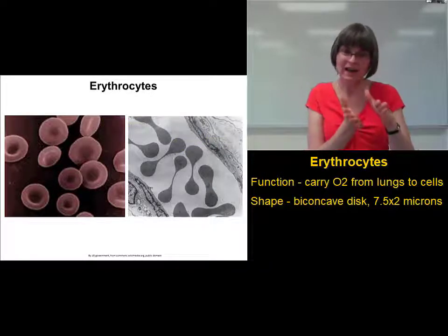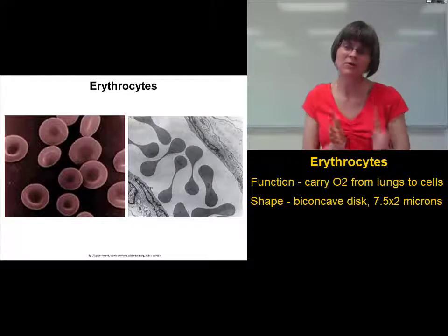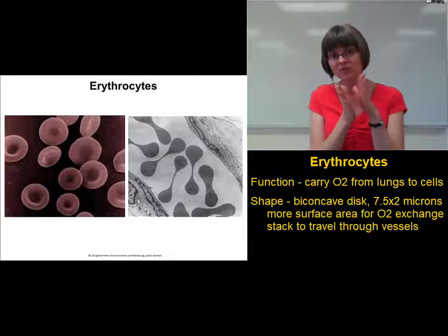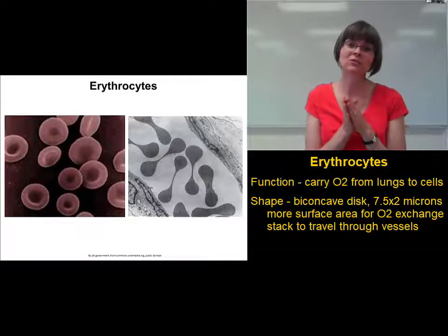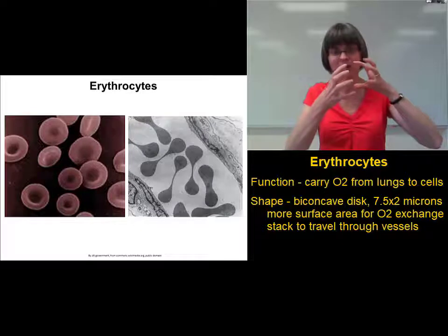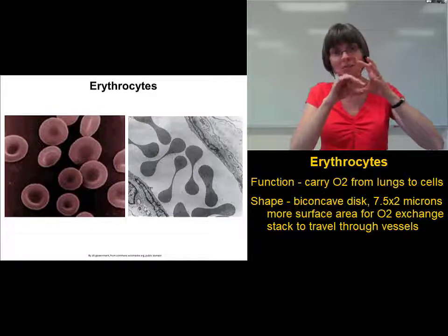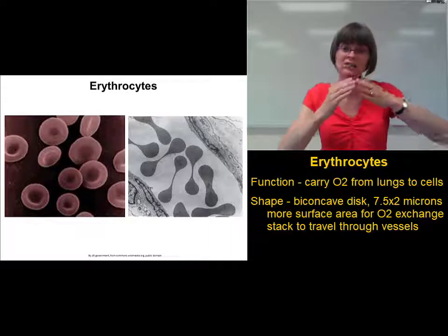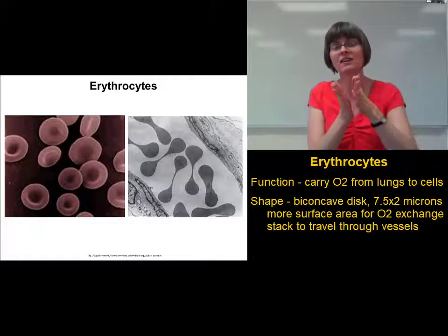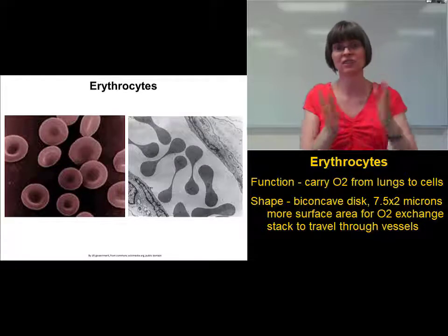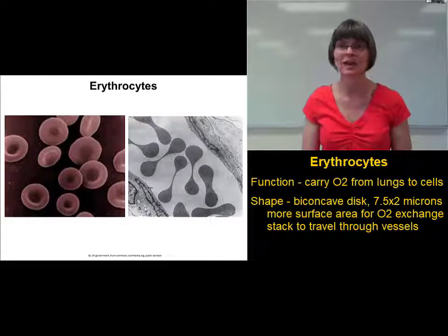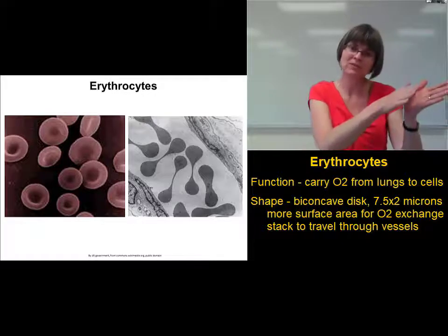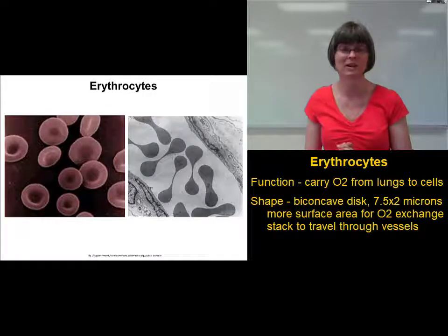This biconcave disc shape is important for a couple of reasons. One, it provides more surface area compared to the volume, so you get better exchange of oxygen. If you're in a spherical cell, the part in the middle of the sphere is going to be far away from the edge and might not get good oxygen exchange. With a flat cell, all areas are close to the surface. The other reason is it allows erythrocytes to stack up well going through blood vessels.